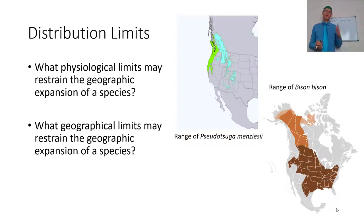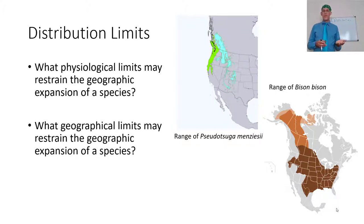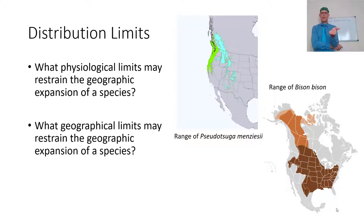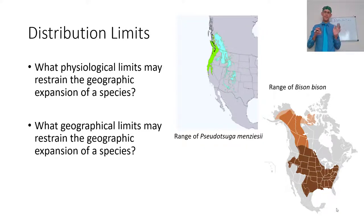Pseudotsuga menziesii is actually two separate subspecies. There's the green one — the Douglas fir we know and love on this side of the Cascade Mountains — and then there is an eastern variety that can live as far south as New Mexico. There's a certain amount of moisture in the winters that Douglas fir needs. Cold, frozen winters are not good for this plant. There's a certain temperature range it can withstand — the heat of the Los Angeles climate is simply too hot, and up north it cannot live in Alaska.